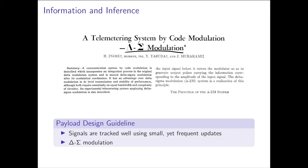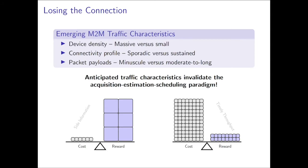Some applications that are coming, like video surveillance, are also content-rich. But the thesis is that if the content a machine produces or desires is similar to what humans want, then we already know how to handle that type of traffic well. Whereas if they only want a small payload with very low delay, this is fairly new. The challenge with small payloads and short delay is that it invalidates the acquisition, estimation, and scheduling paradigm that has been so successful in wireless systems, because it shifts the balance between the cost and the reward of this scheme.